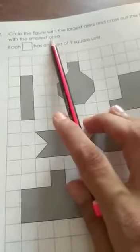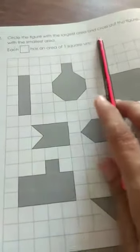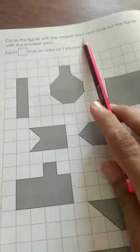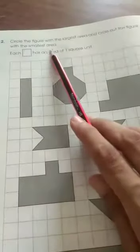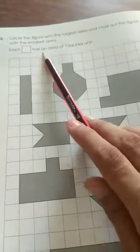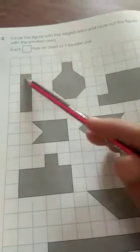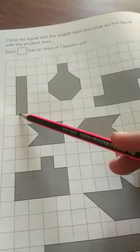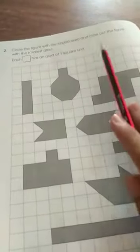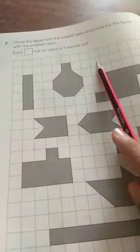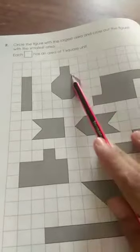Circle the figure with the largest area and cross out the figure with the smallest area. Each has a 1 square unit. So, you will count it like this. 1, 2, 3, 4. So, you will write it. First, write the square units for all shapes. And then, you will just do the largest and smallest. I hope you understand this thing. And you will solve it by yourself.